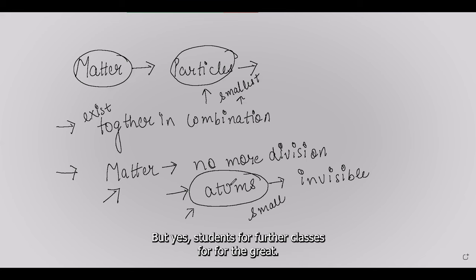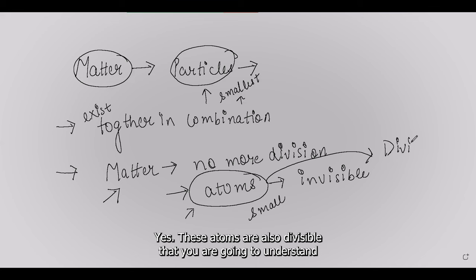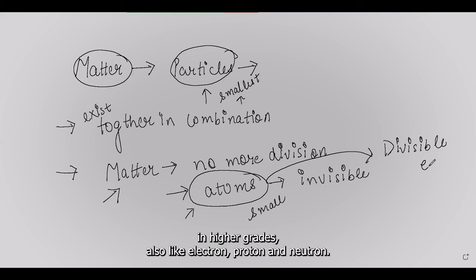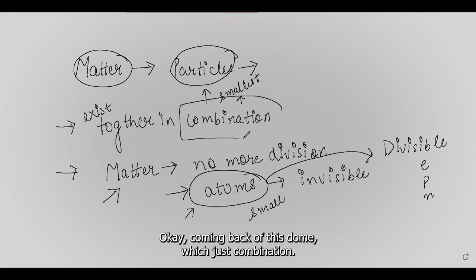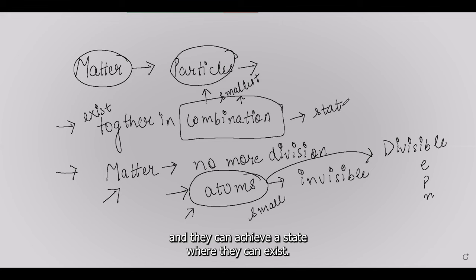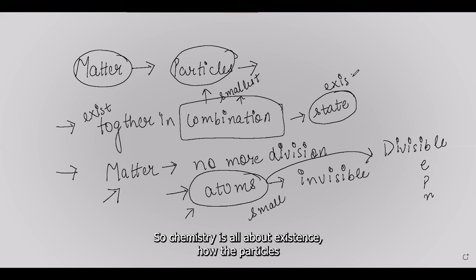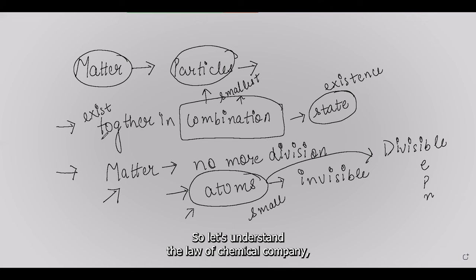For further grades, you will understand that atoms are also divisible — into electrons, protons, and neutrons. But in today's session, the smallest particle is called the atom. Coming back to the concept of combination: particles cannot exist individually; they must chemically combine with fellow atoms to achieve a stable, existing state.